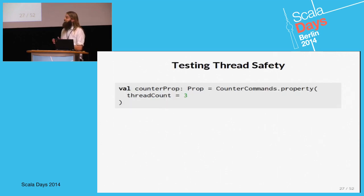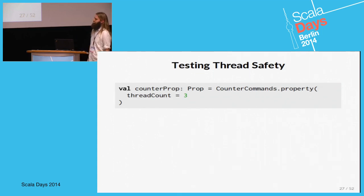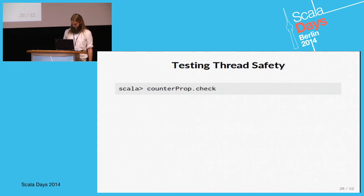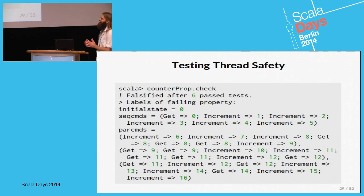Now we can add a parameter to our property function — we don't change anything in the model or specification, we just create the property with the thread count set to 3 and check it again. Ouch — now we failed again.